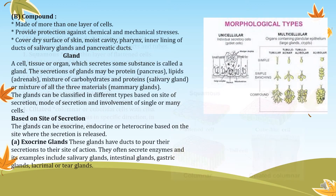There is also compound epithelial tissue, or stratified epithelial tissue, made up of more than one layer of cells. It provides protection against chemical and mechanical stresses, covering the dry surface of the skin, moist cavities, pharynx, inner lining of the ducts of salivary glands, and pancreatic ducts. We find compound epithelial tissues in places where cells undergo too much wear and tear. For example, our skin is made up of stratified epithelial tissue because many dead cells are continuously being removed and the next layer of cells come up. If it were a single layer, it would cause damage to the skin.